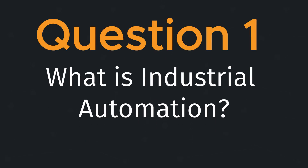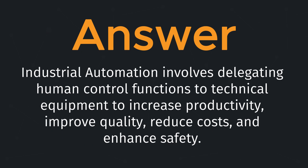Question one: what is industrial automation? Industrial automation involves delegating human control functions to technical equipment to increase productivity, improve quality, reduce costs, and enhance safety.